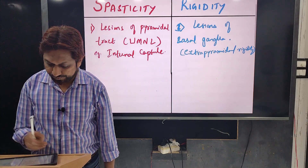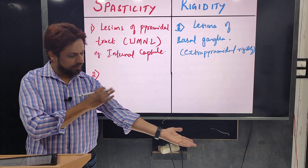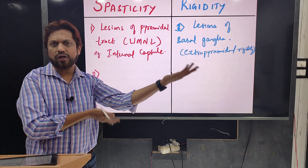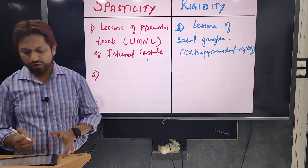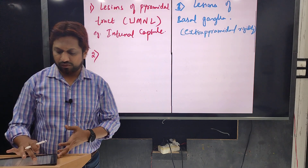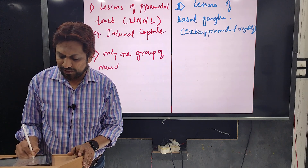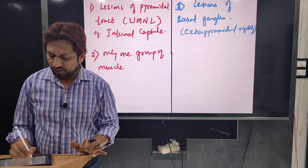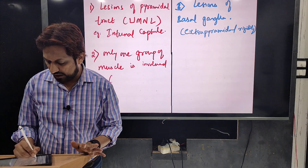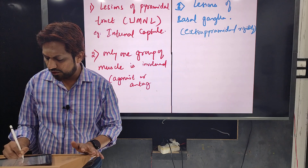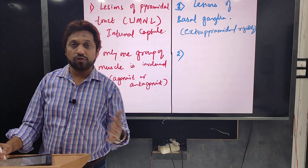The second difference is that in spasticity, only one group of muscles is involved — either agonist or antagonist. For example, flexor muscles in the upper limb or extensor muscles in the lower limb — the anti-gravity muscles are most commonly affected. You can see circumduction gait in stroke patients. Whereas in rigidity, both groups of muscles are involved — that is, both agonist and antagonist.